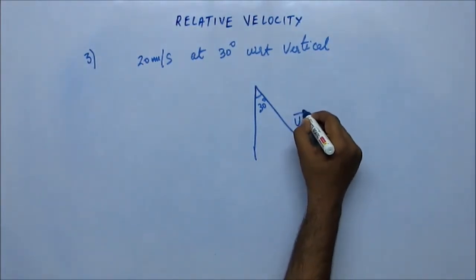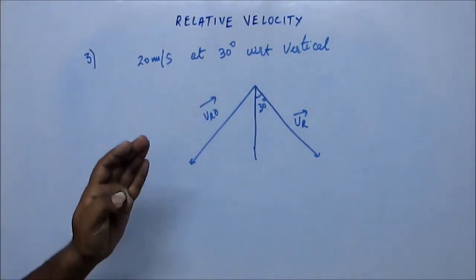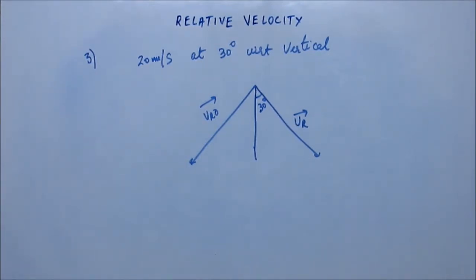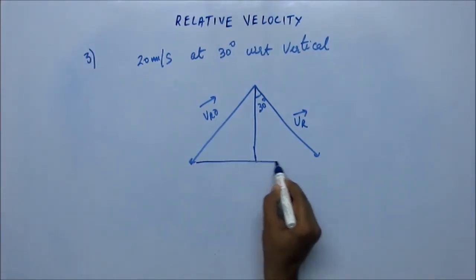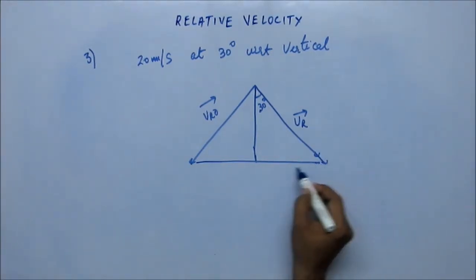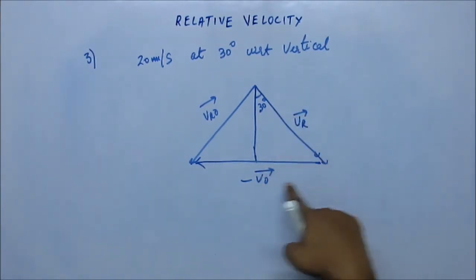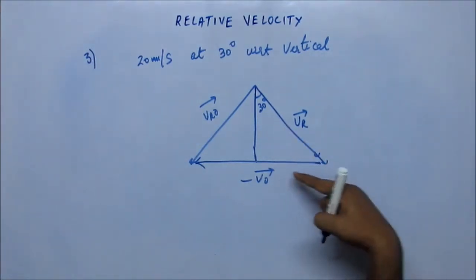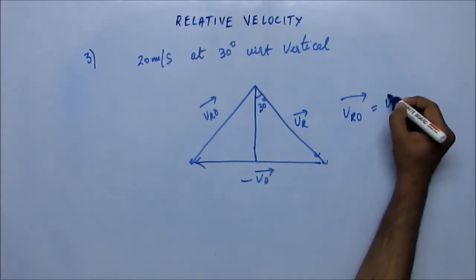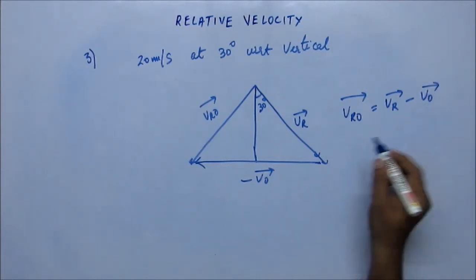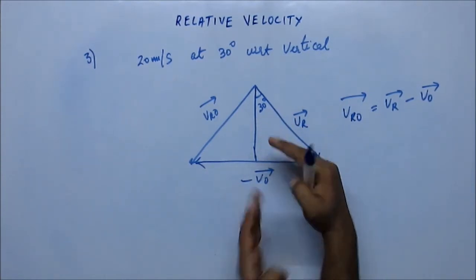This is the velocity vector of rain, and this is how the rain should appear to be falling to the observer. We have to make the vector triangle. The man is moving horizontally, so this is VR and this must be the minus V₀ vector. From the triangular law of vector addition: VR vector minus V₀ vector gives VR₀, the velocity of rain with respect to observer, which equals velocity of rain vector minus velocity of observer vector.